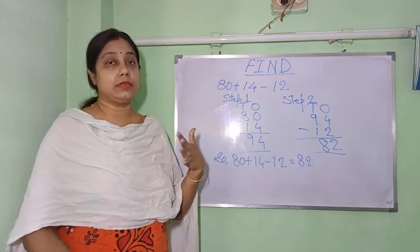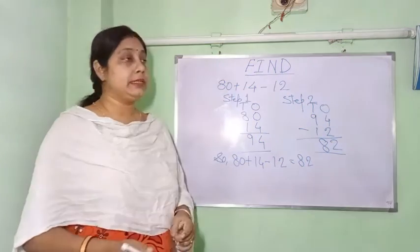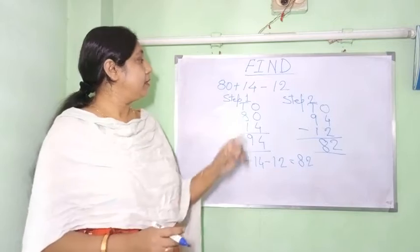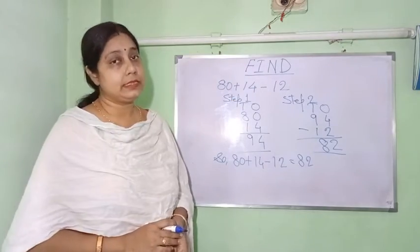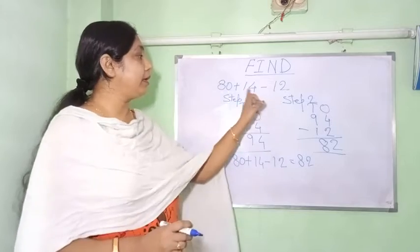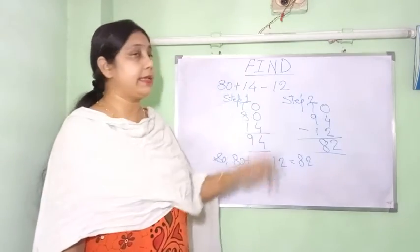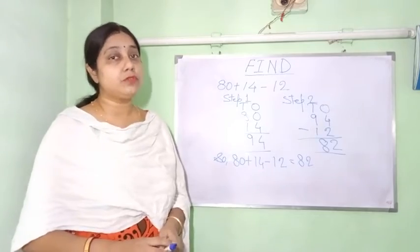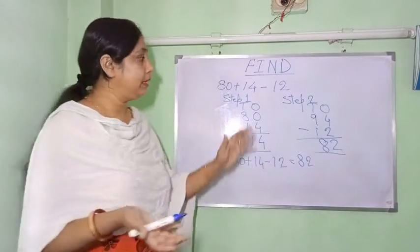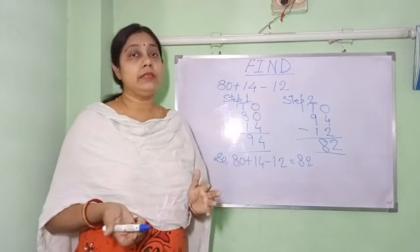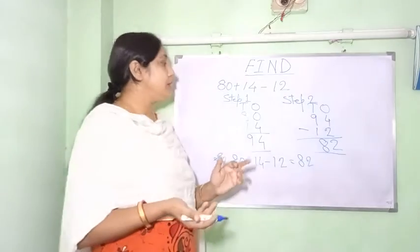So: 80 plus 14 minus 12. Whenever no sign is in front of any number, that means there is a plus sign there. Before 14, plus is there — that means plus 14. Before 12, minus sign is there — that means minus 12. The sign before the number belongs to that number.